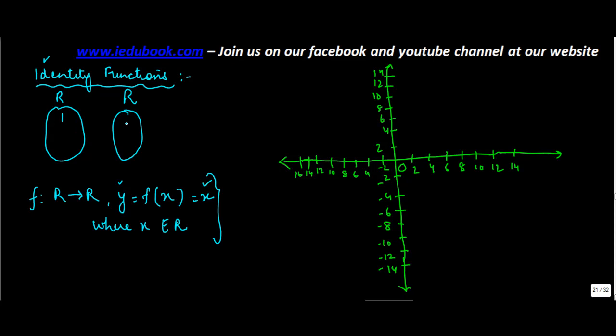So whatever value you get here, the same value you will get here. If you have 2, 2, minus 1, minus 1, 3, 3. So let us take a certain set of values for x and y. Let's say x is equal to 1. Then y is equal to f(x) is equal to x. So y will also be equal to 1.